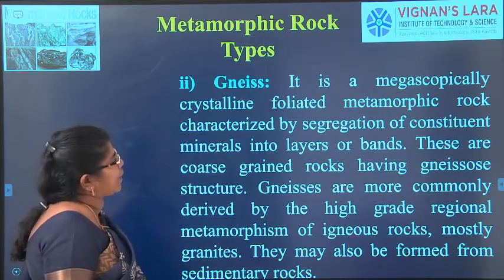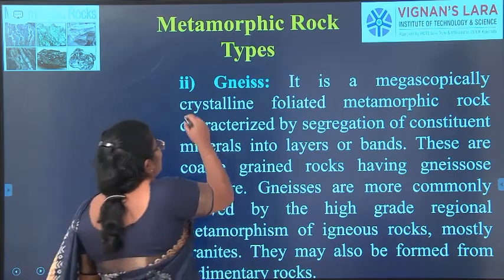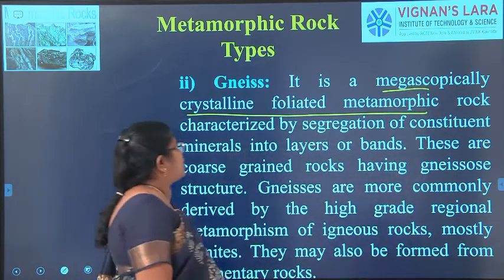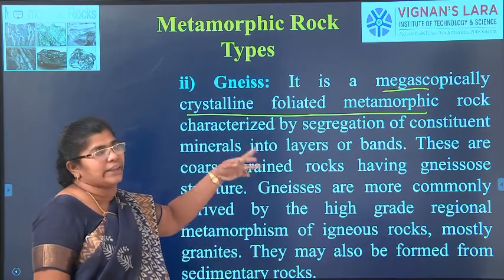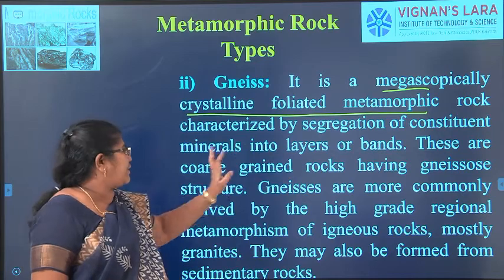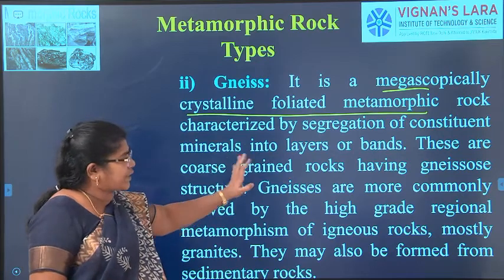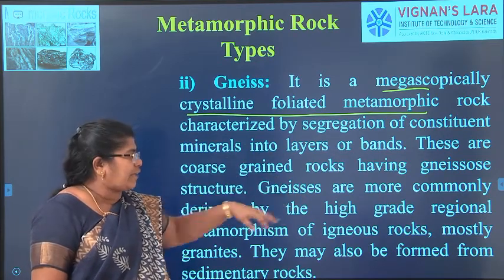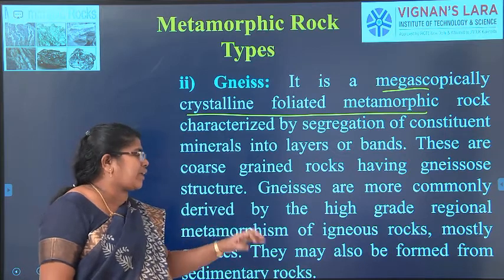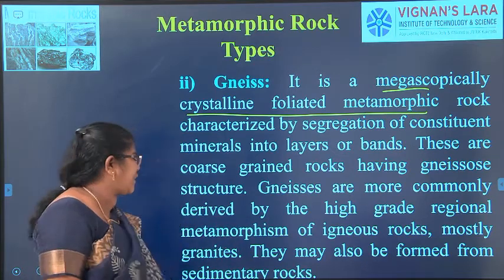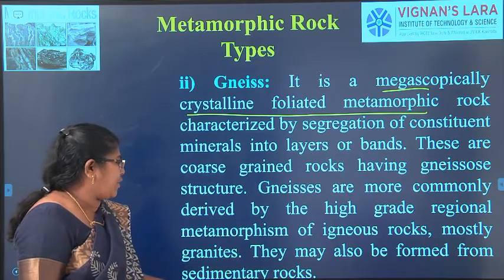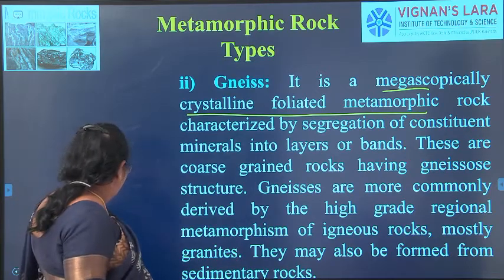Gneiss is a macroscopically crystalline, foliated metamorphic rock, characterized by segregation of constituent minerals into layers or bands. These are coarse-grained rocks having gneissic structure. Gneiss is more commonly derived from higher-grade regional metamorphism of igneous rocks, but may also be formed from sedimentary rocks.